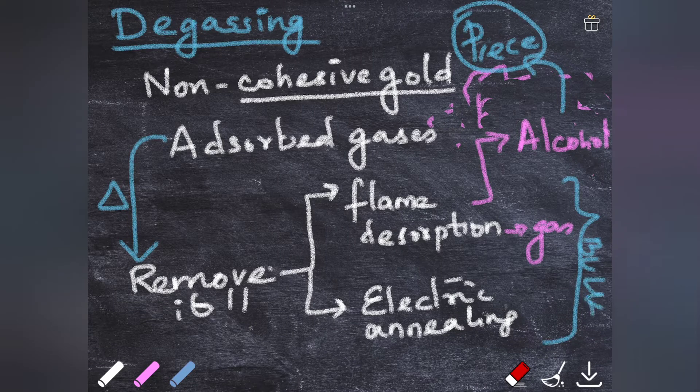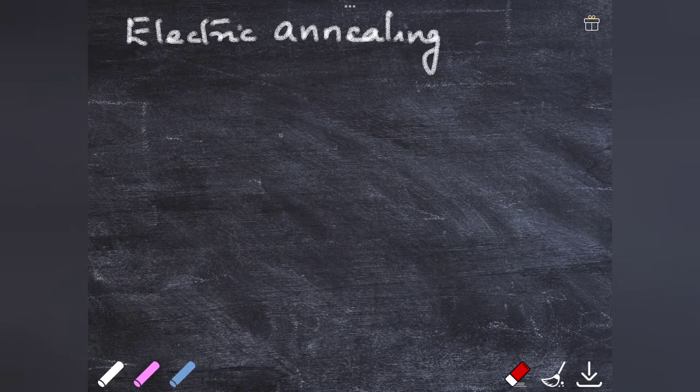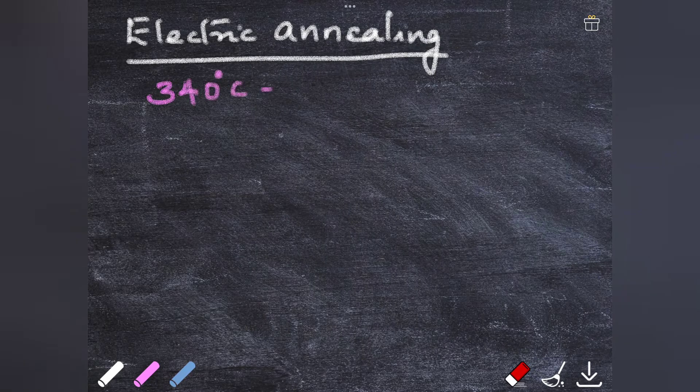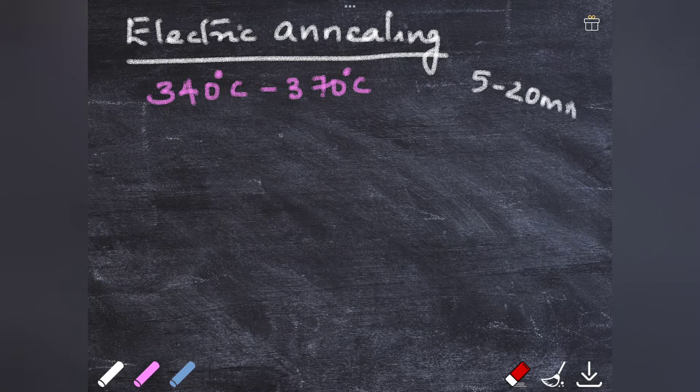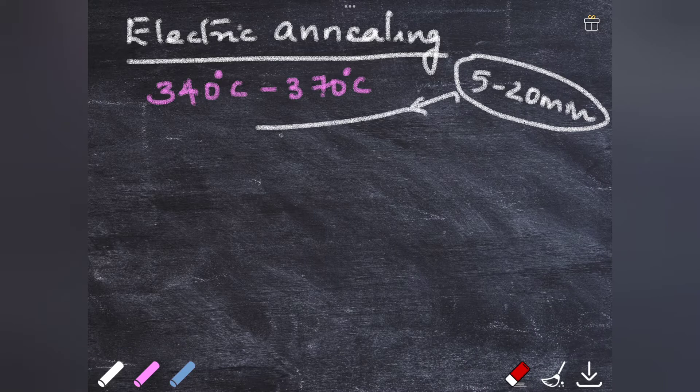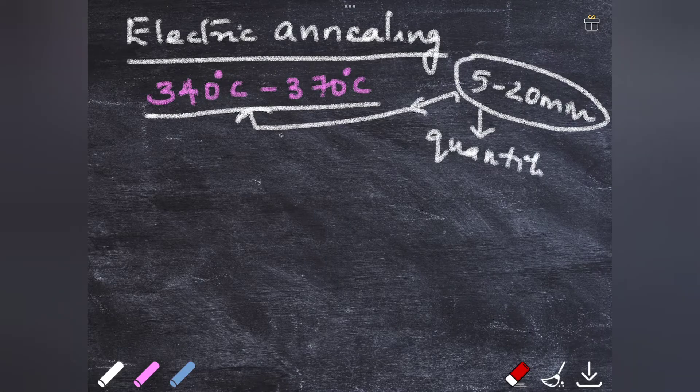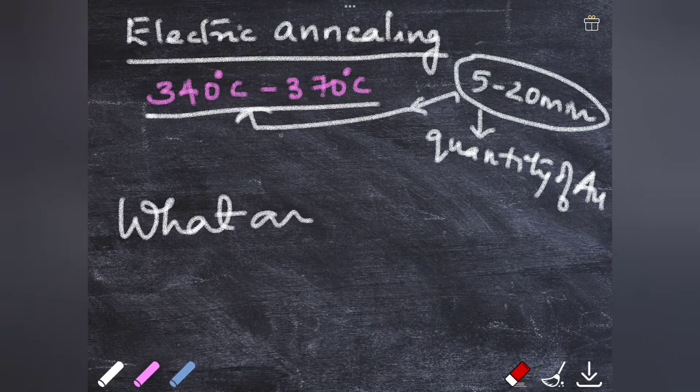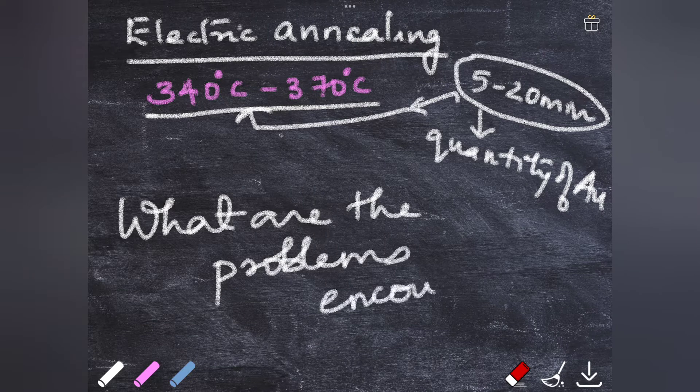The alcohol flame desorption is mainly done for heating each piece, and the gas is done for bulk heating of the gold. First, let's see what is electric annealing. Here, electric current is used to maintain the temperature between 340 to 370 degrees Celsius for about 5 to 20 minutes. The time taken is dependent upon the temperature used and the quantity of the gold that is to be heated.